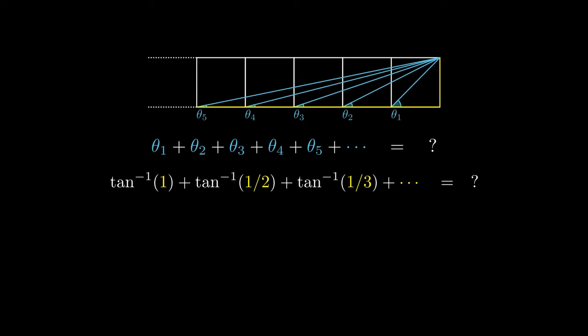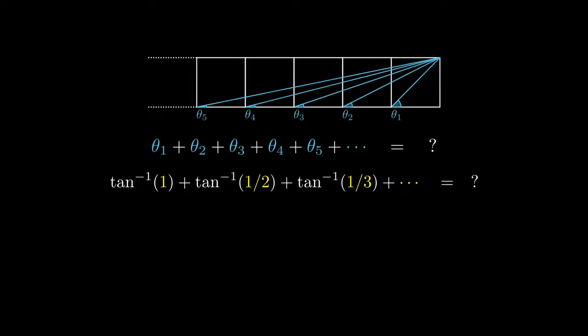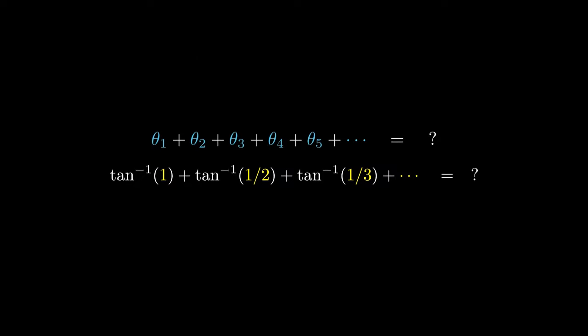Surprisingly, the sum of the first three arctangents equals pi over 2, or 90 degrees. You can see why this is the case in the video card. But here, we are interested in finding the sum of the infinitely many arctangents.